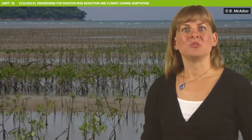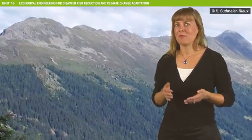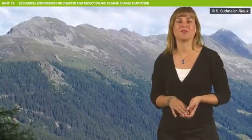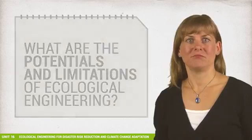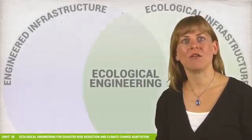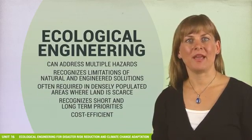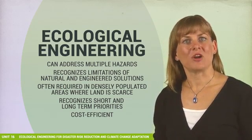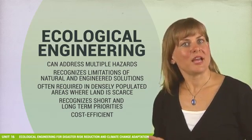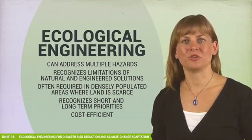The need for combined solutions using hard engineering options also depends on the local context. For instance, using forests to stabilize avalanche-prone slopes reduces the frequency of avalanches, but not the fact that avalanches will still occur under specific conditions. Combining natural and engineered measures makes sense, because a combined approach can benefit from the potentials of both types of measures and address multiple hazards, for example protection from flooding and landslides. Combined natural and engineered solutions can complement each other and minimize limitations. Hybrid solutions are often required in densely populated areas where land is scarce, and can also address both short- and long-term priorities.